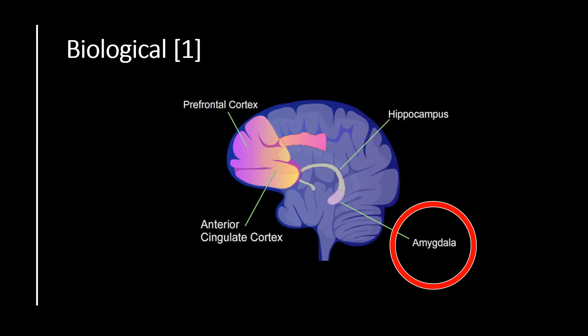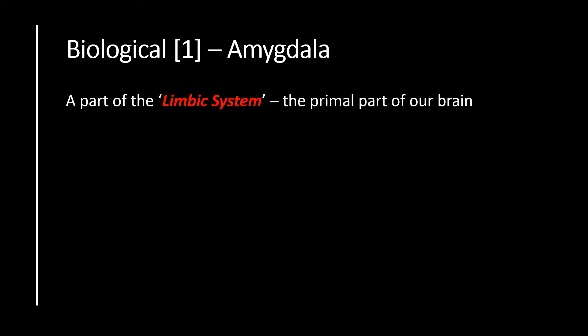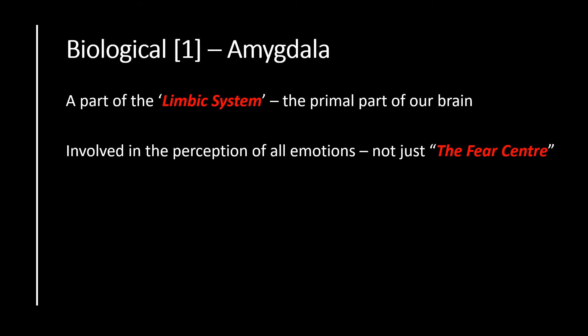First we'll talk about potential biological components. Although there are many, this lecture will focus on the amygdala and the anterior cingulate cortex. The amygdala is a brain region which forms part of the limbic system — a primal part of the brain existing in many different animals. The amygdala is involved in the perception of all emotions, and not just the fear centre of the brain which it was historically thought to be.